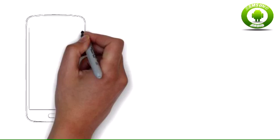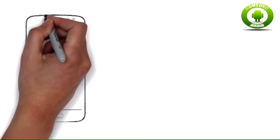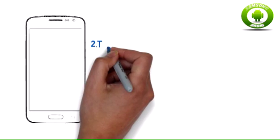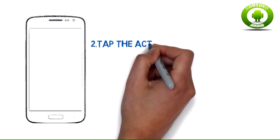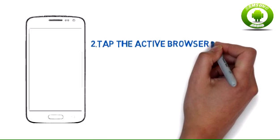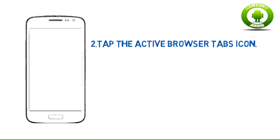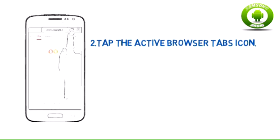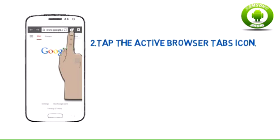Step 2: Tap the active browser tabs icon. In the upper right of the screen, tap the icon that looks like multiple squares stacked on top of each other.